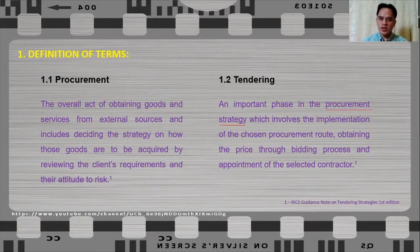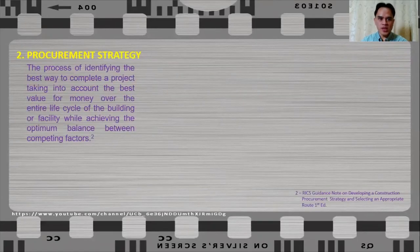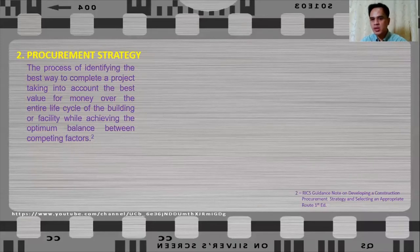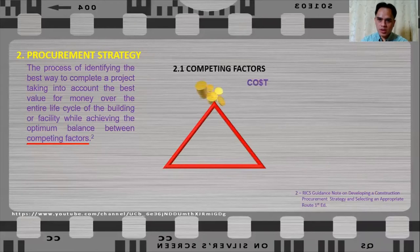Now we have another term here, procurement strategy. What is procurement strategy? Procurement strategy is the process of identifying the best way to complete a project, taking into account the best value for money over the entire life cycle of the building or facility, while achieving the optimum balance between competing factors. Again, what are these competing factors? These competing factors are the cost, time, and quality.